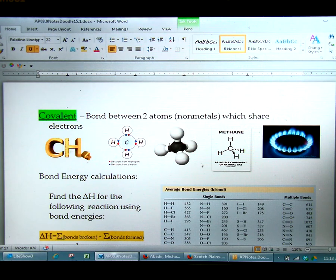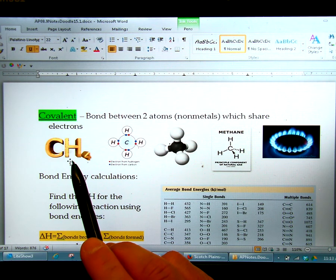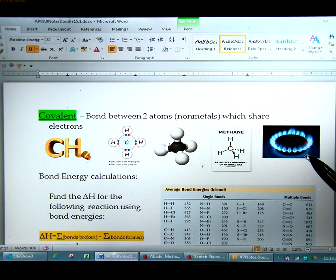Today we're going to talk about bond energy in the Chapter 8 and 9 AP Chemistry Packet on page 5. We're going to start off with talking about methane. Methane is CH4. This is what comes out of your stove if you have a blue flame at home. It's also what we use in the classroom when we use our Bunsen burners.